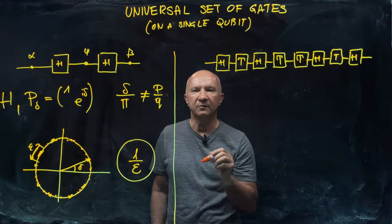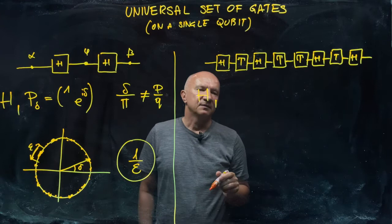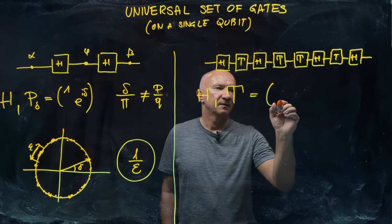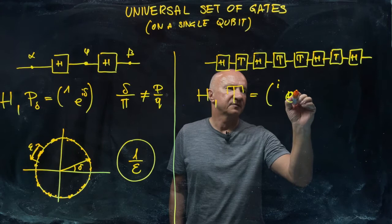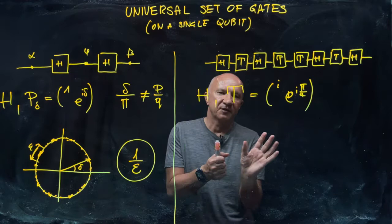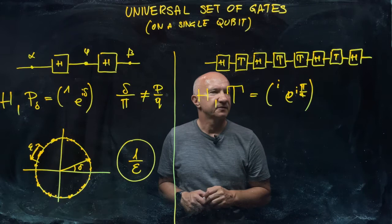So it turns out that instead of picking up the Hadamard and that kind of phase gate, it's better, in fact, for many applications to pick up the Hadamard. Hadamard is always there. And the T gate. So T gate is a phase gate, but it is a gate that does the phase shift of pi over four.